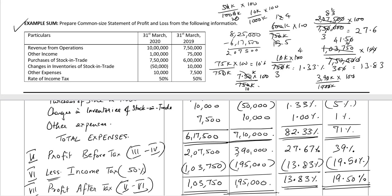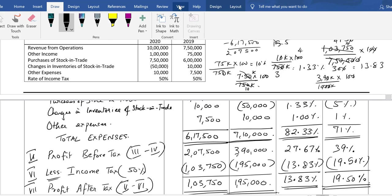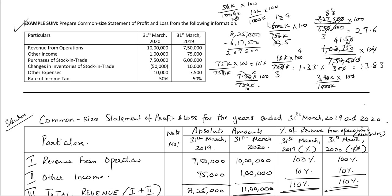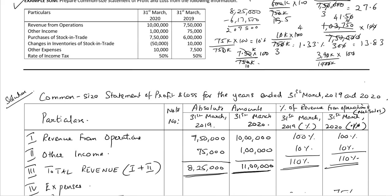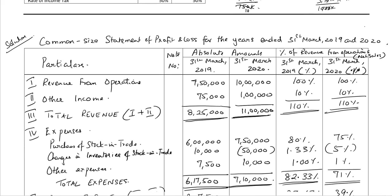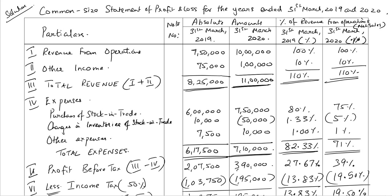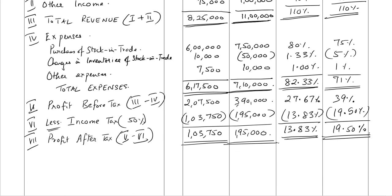So we've completed the solution. I will remove the split and we can view the answer. That is on the top — this is the first screen, and the second screen shows the complete common size statement of profit and loss.